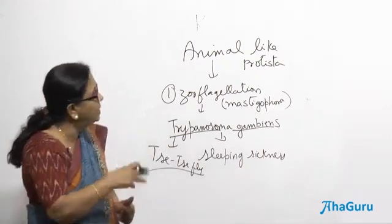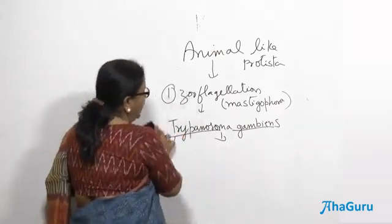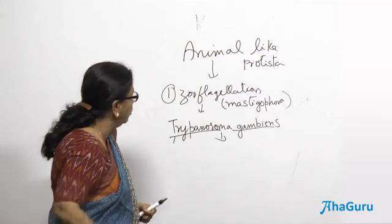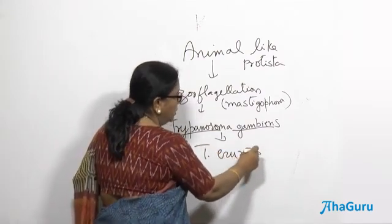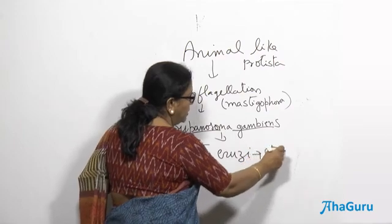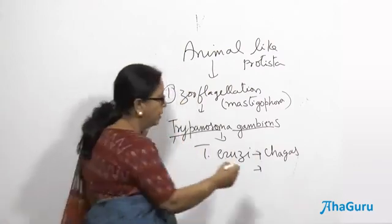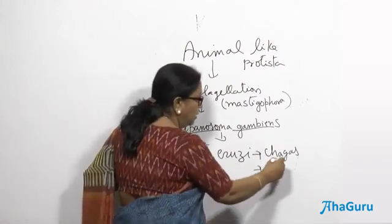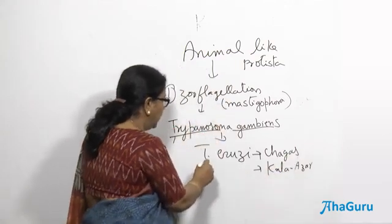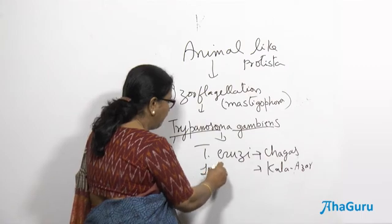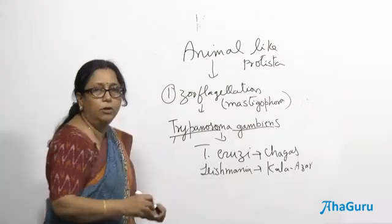There are different species of trypanosoma. Apart from trypanosoma gambiae, there is one more known as trypanosoma cruzi, which causes another disease called Chagas disease. There is also one disease called Kala Azar, which is caused by a zooflagellate called Leishmania.